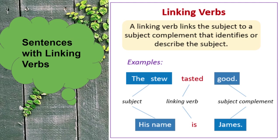Linking verbs: a linking verb links the subject to a subject complement that identifies or describes the subject. For example: 'The stew tasted good' — 'the stew' is the subject, 'tasted' is the linking verb, and 'good' is the subject complement. 'His name is James' — 'his name' is the subject, 'is' is the linking verb, and 'James' is the subject complement.